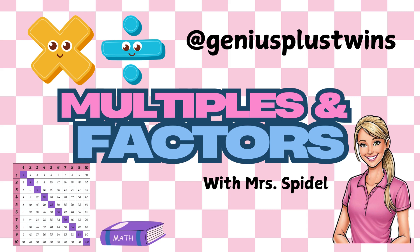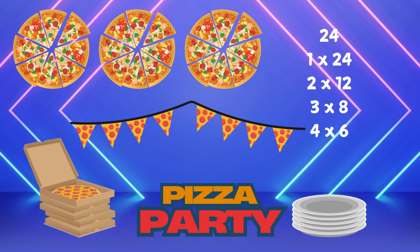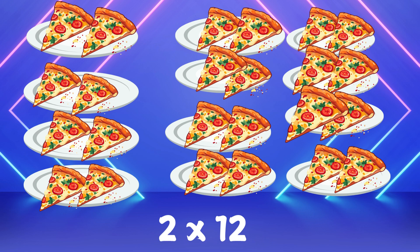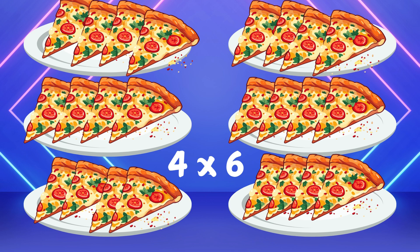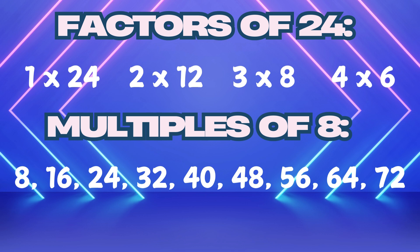Today we're going to be learning about factors and multiples. To start off, imagine you're planning the perfect pizza party. You have 24 slices of pizza and need to arrange them on plates. Some plates might get two slices, some three, maybe even four or six. Each way of sharing these slices evenly shows us something special about the number 24 — these are its factors. And if you needed to order more pizzas with the same number of slices, those would be multiples.